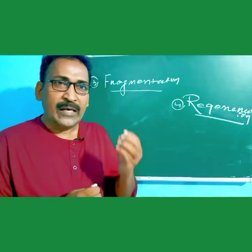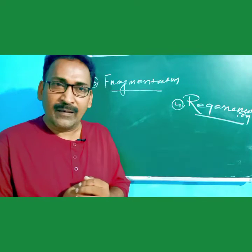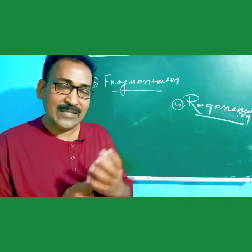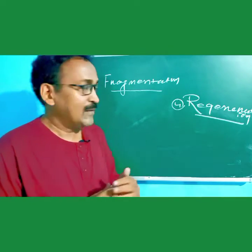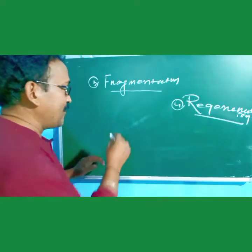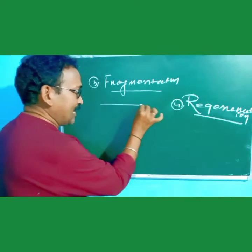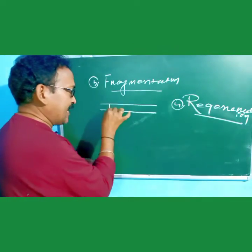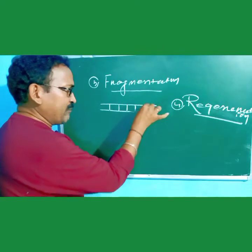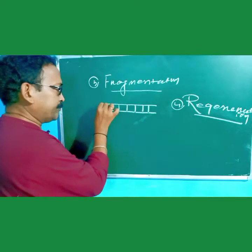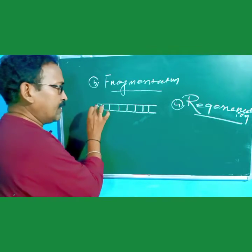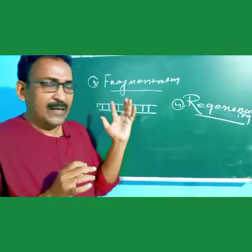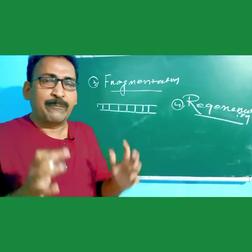Fragmentation is seen in filamentous algae, for example Spirogyra. It has a filament-like structure and its body gets fragmented into different pieces. This fragmentation happens due to different factors.